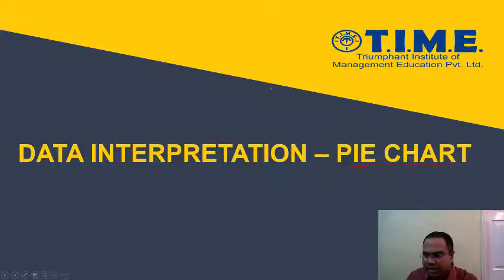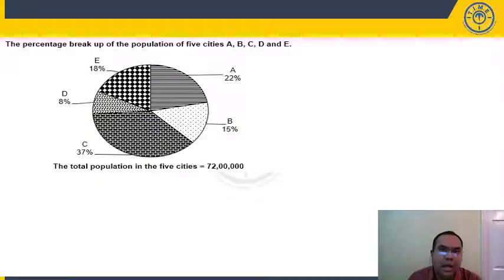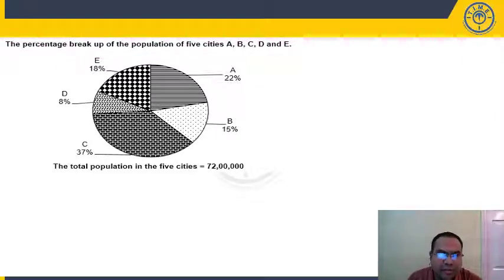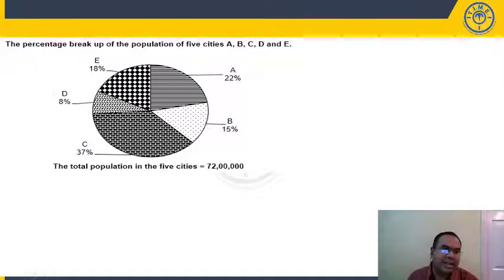Now let us take up questions based on pie charts. For questions 1 to 5, study the following pie chart carefully. It shows the percentage breakup of population of 5 cities A, B, C, D, and E. The total population of the 5 cities together is 72 lakhs. City A is 22%, B is 15%, C is 37%, D is 8%, and E is 18%.